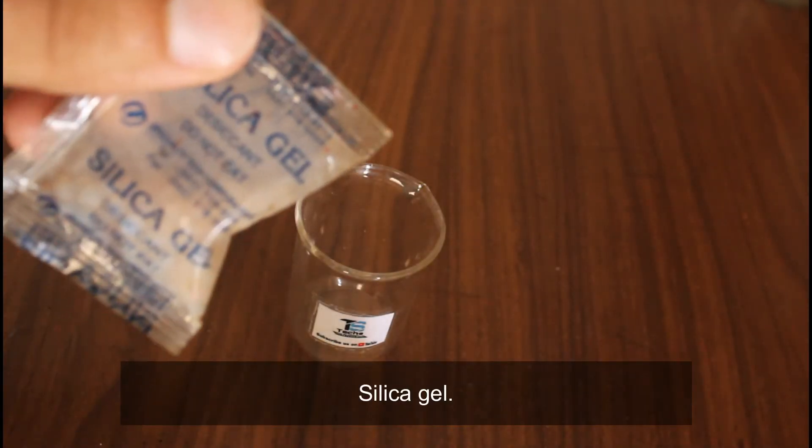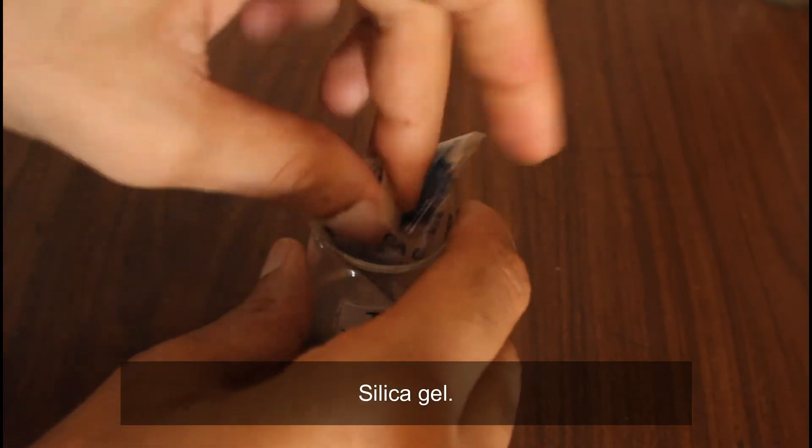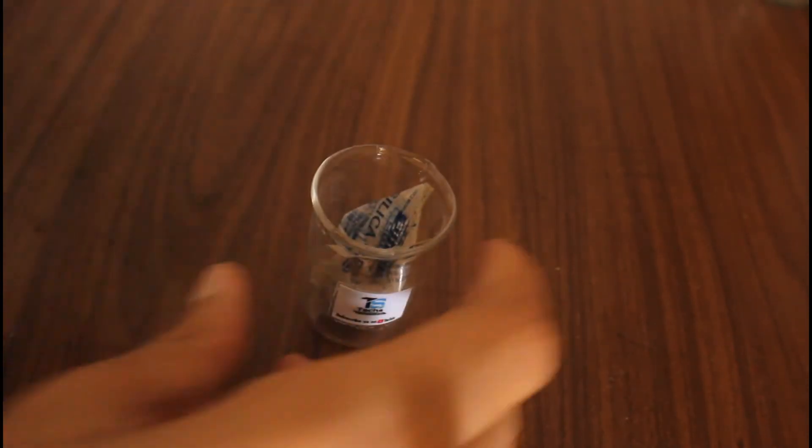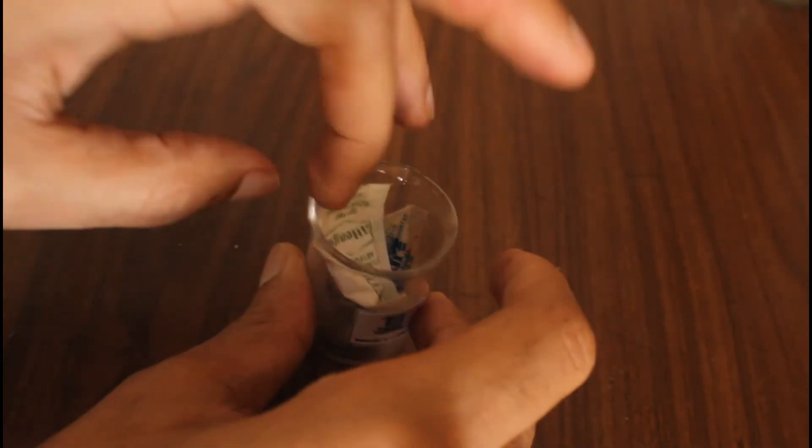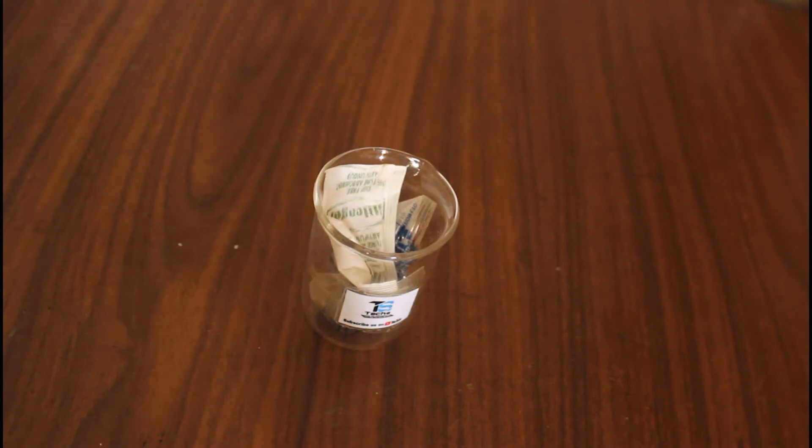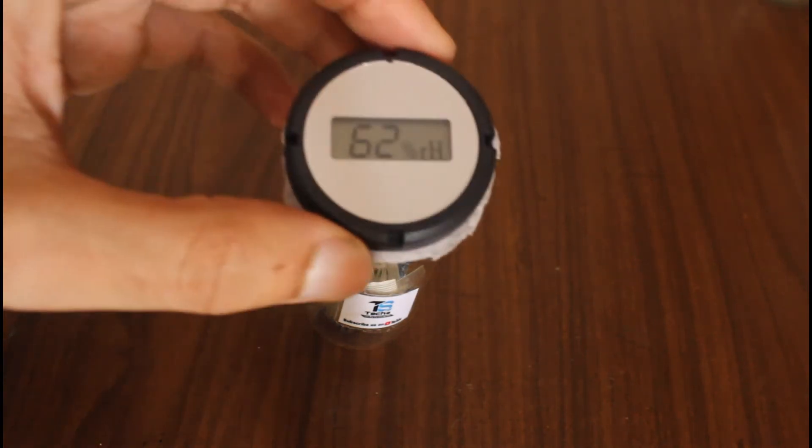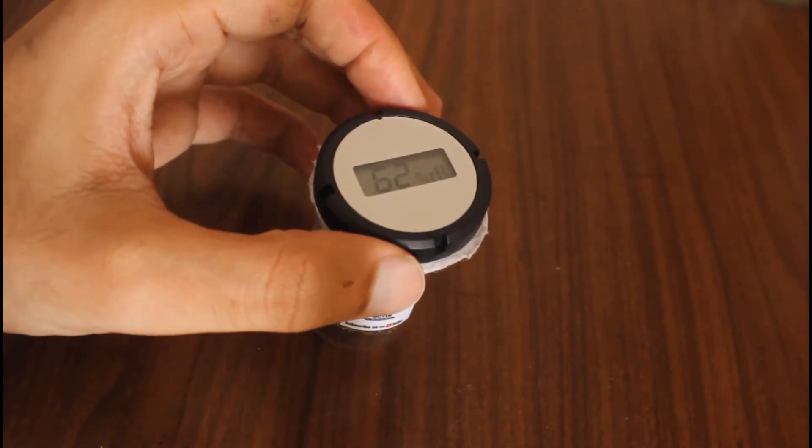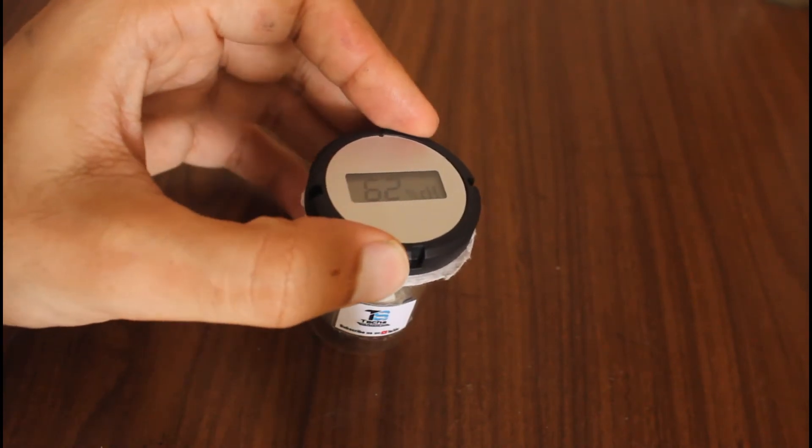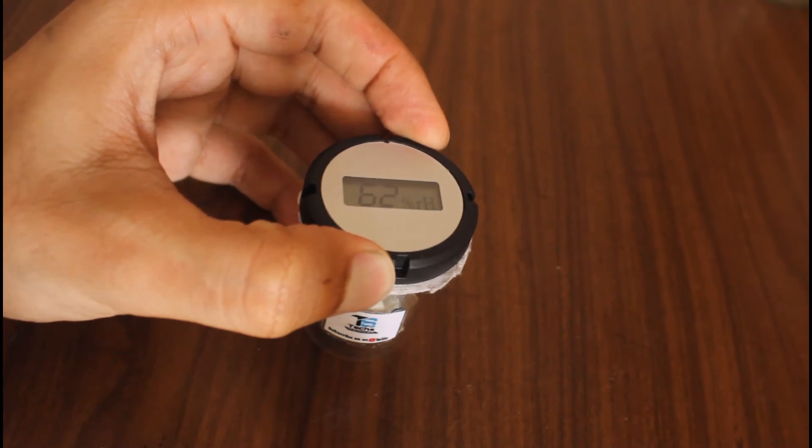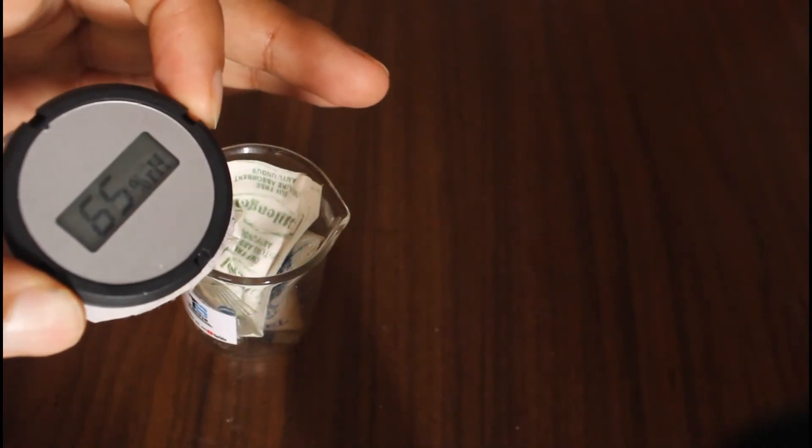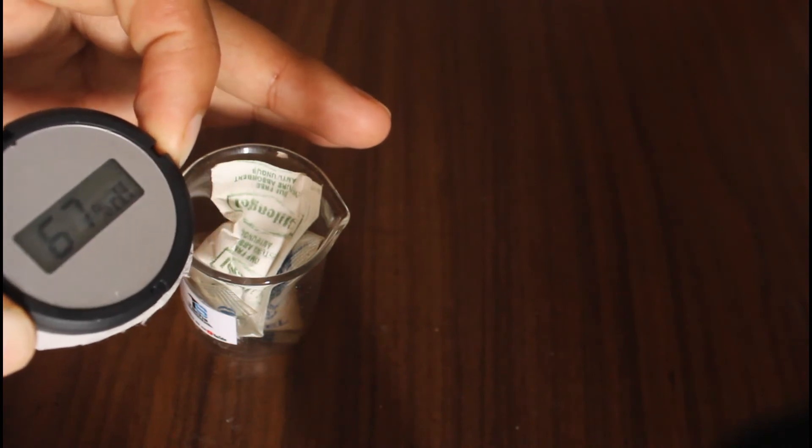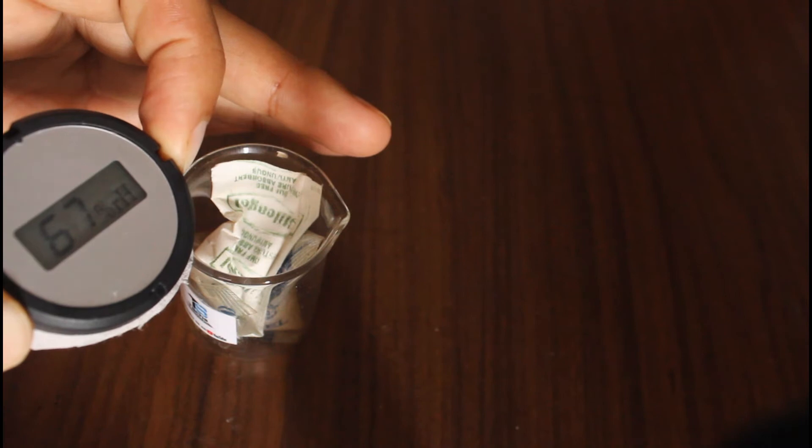Now the silica gel, which is most widely used as a moisture absorber. We found 1% increment of humidity, but here we are getting some fluctuation, maybe because of the rainy season.